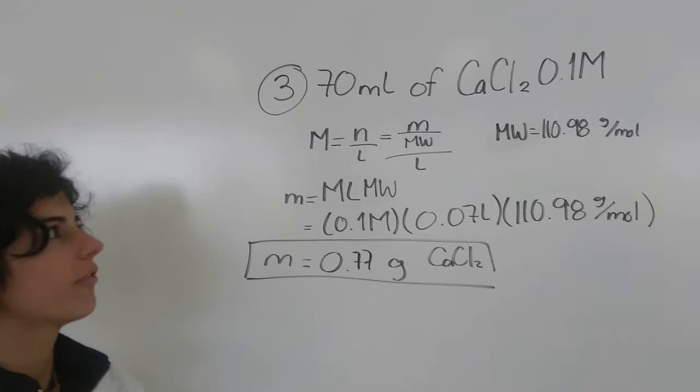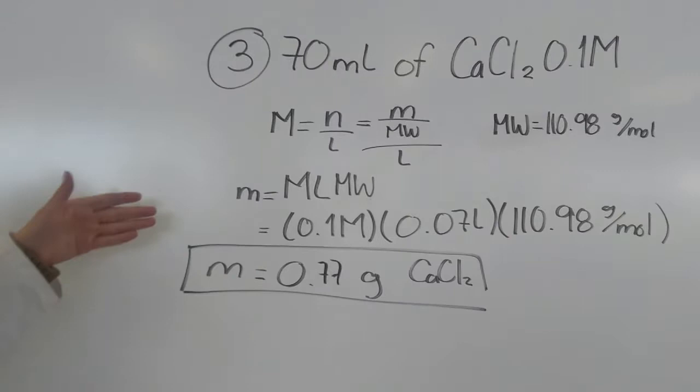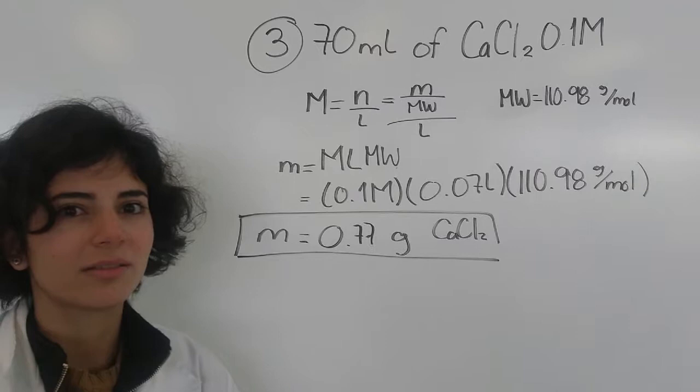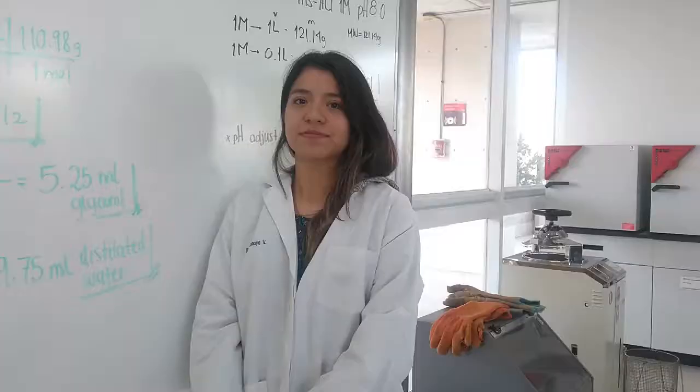For the third solution, we prepare 17 milliliters of calcium chloride at 0.1 molar. We use the molar formula to calculate the amount of calcium chloride needed. We follow the standard protocol for solution preparation and use a magnetic stirrer to dissolve the solute.